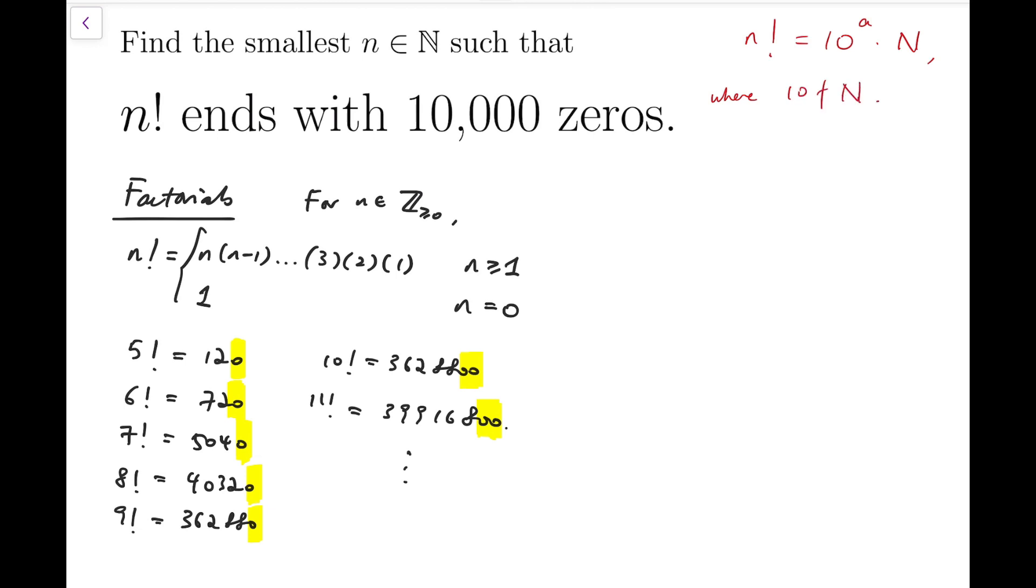where 10 does not divide big N. So that means we've taken out all the factors of 10, and keep dividing n factorial by 10, and the number that remains is the natural number N. Of course, we specify that N is a natural number.